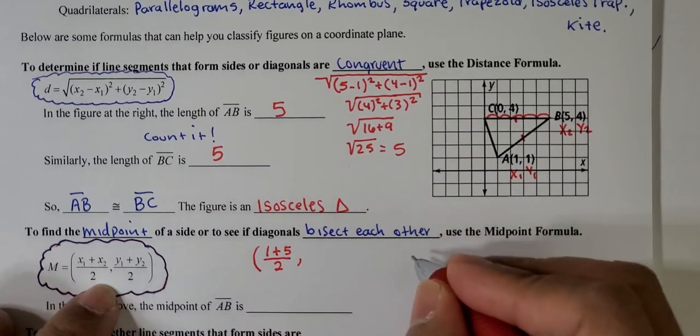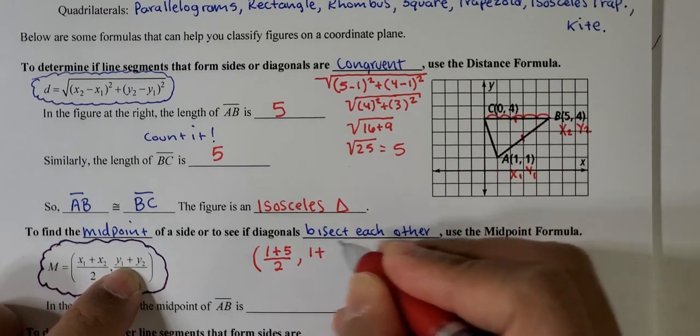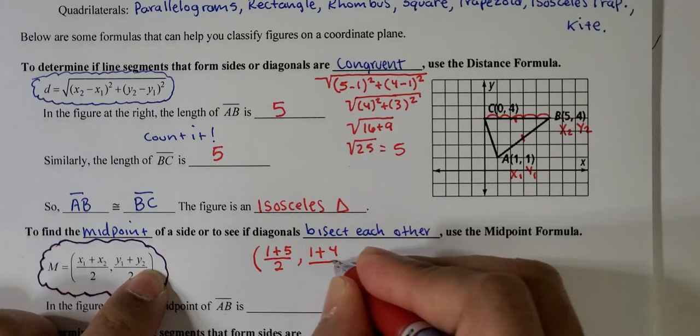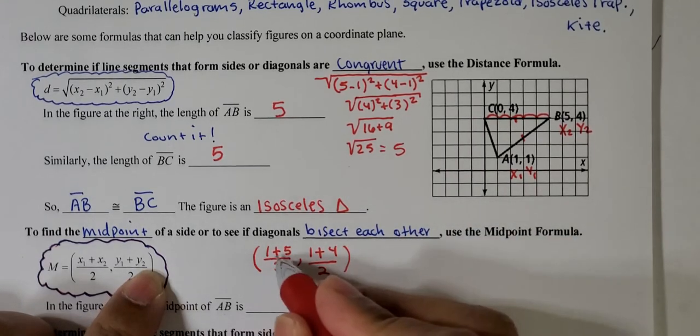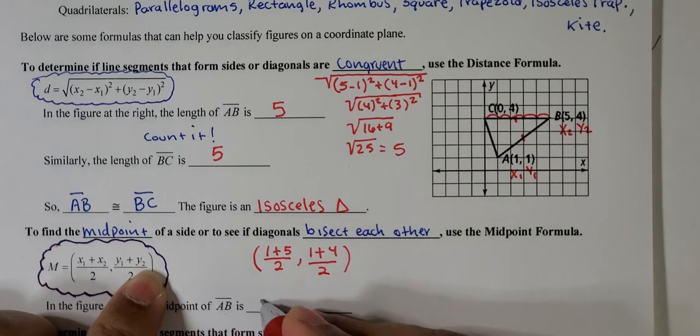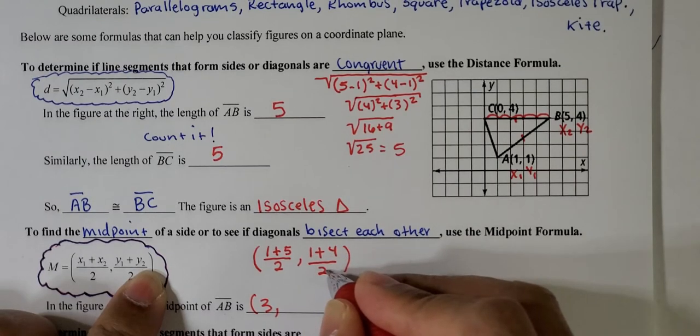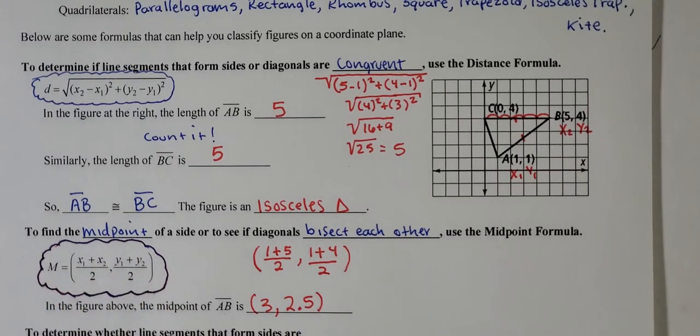x2 is 5, and divide this by 2, and then my y1 value, y1 is 1, plus y2, y2 is 4, and then divide this by 2. So 1 plus 5 is 6, 6 divided by 2 is 3. And then 1 plus 4 is 5, 5 divided by 2 is 2.5. So these will be the coordinates of the midpoint for this segment AB.